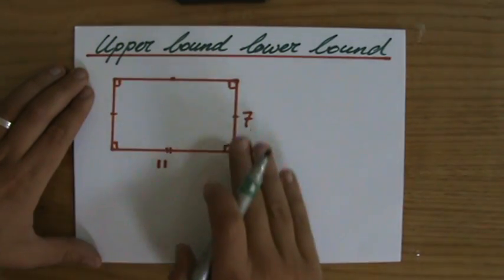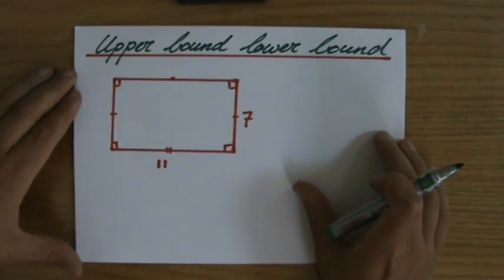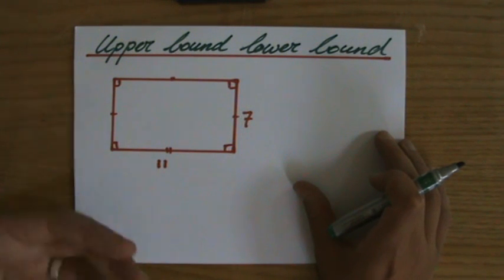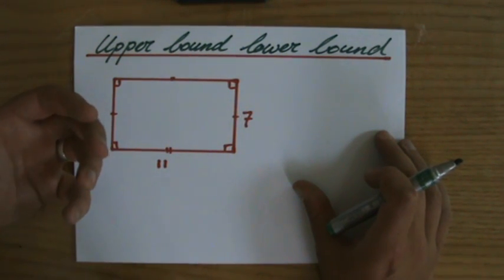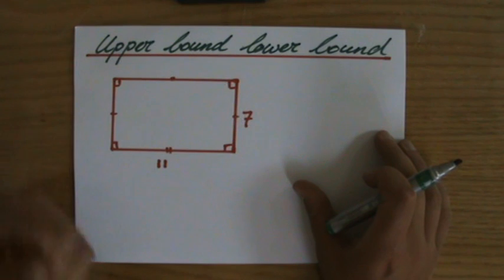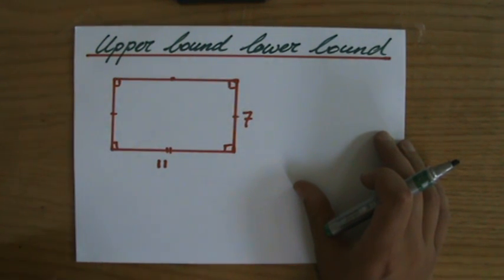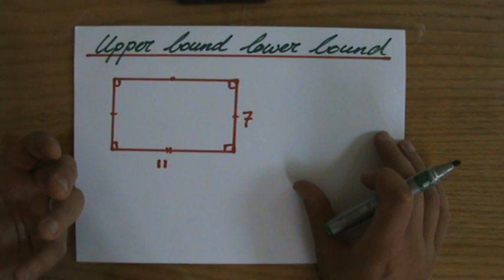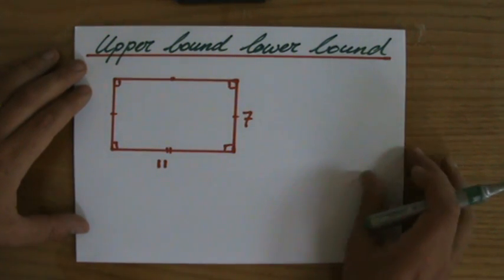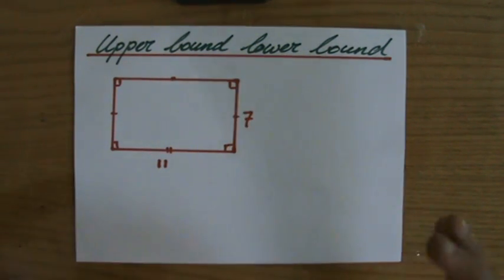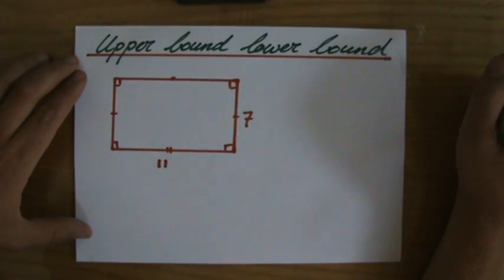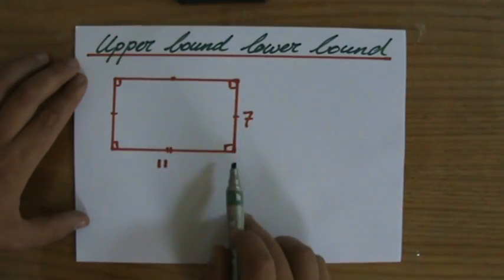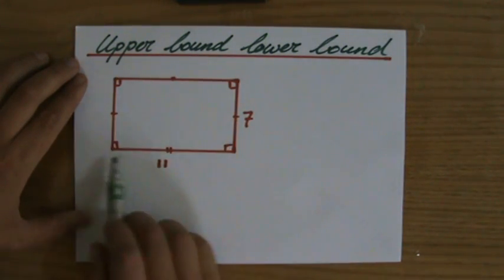They give me a rectangle and say the lengths of the rectangle are corrected to the nearest unit. What is the smallest perimeter the rectangle can have? The rectangle has sides of seven centimeters and eleven centimeters.